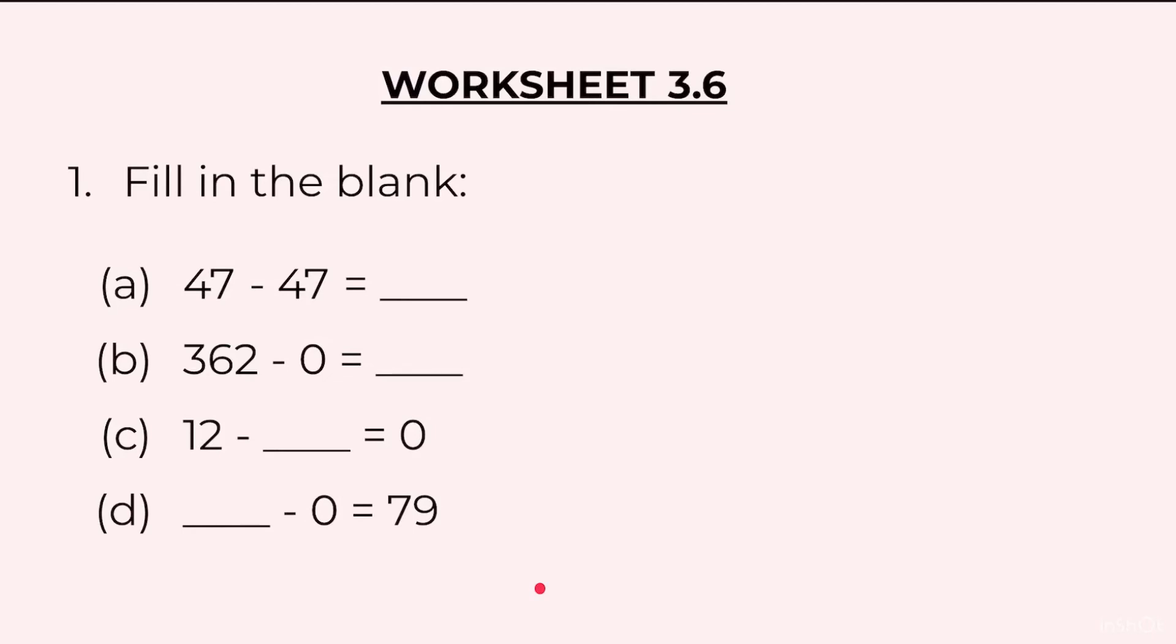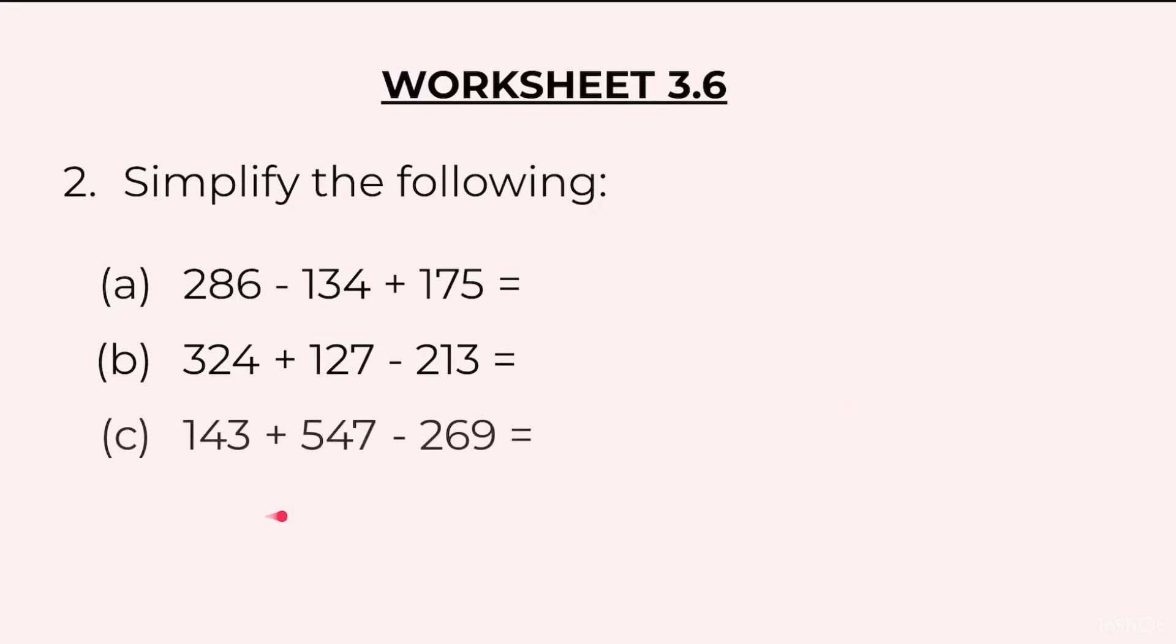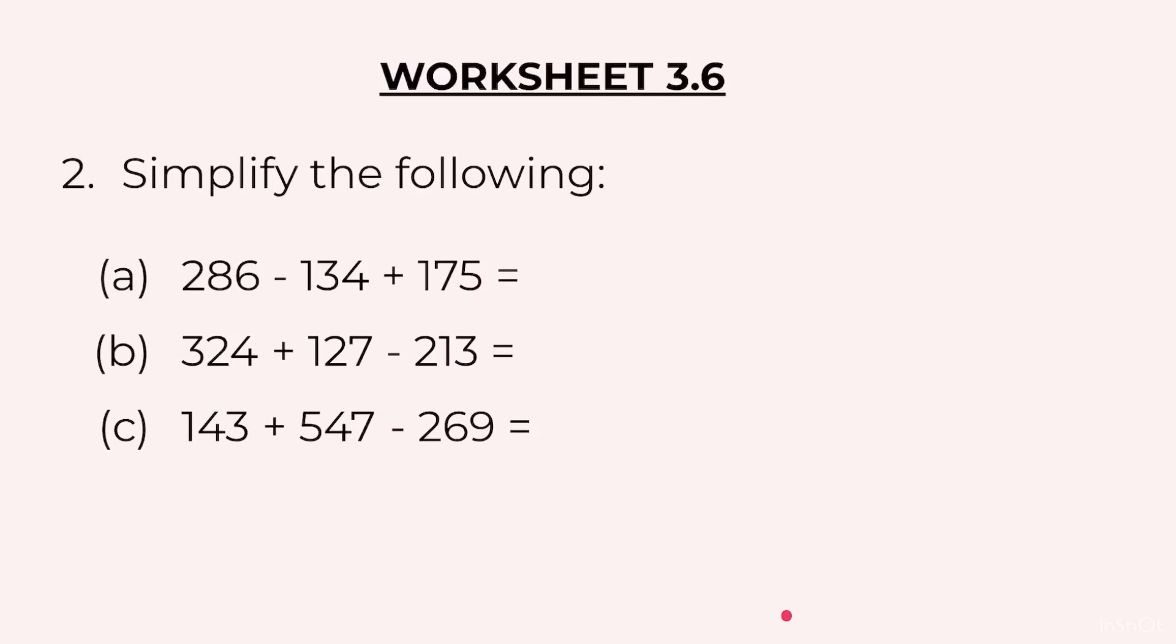Now these are very simple questions. I am sure you would have been able to do it as I was reading the questions to you. Moving on to the next question. Question 2: Simplify the following. A. 286 minus 134 plus 175. B. 324 plus 127 minus 213. C. 143 plus 547 minus 269. You may pause the video here. Once you have done the questions you may unpause and continue to look at the solutions.